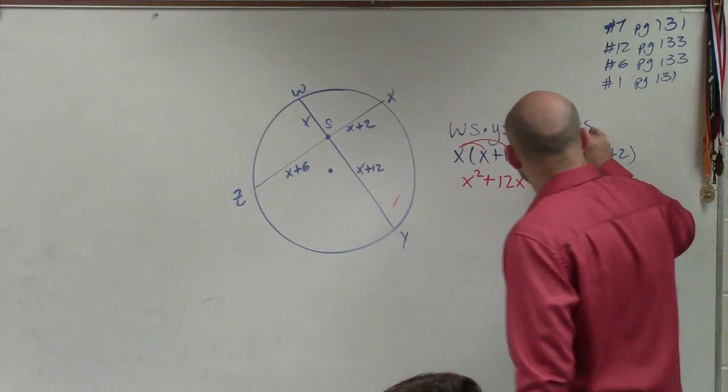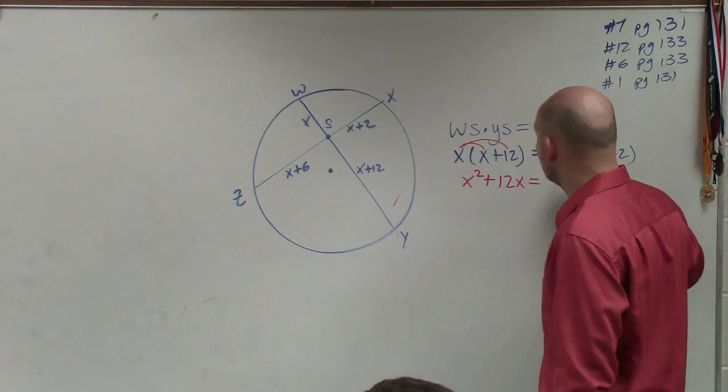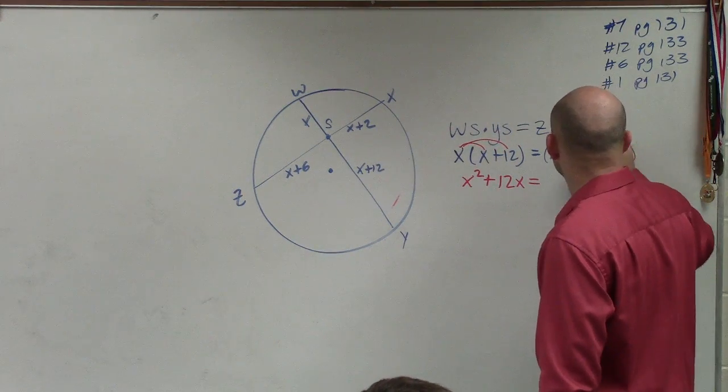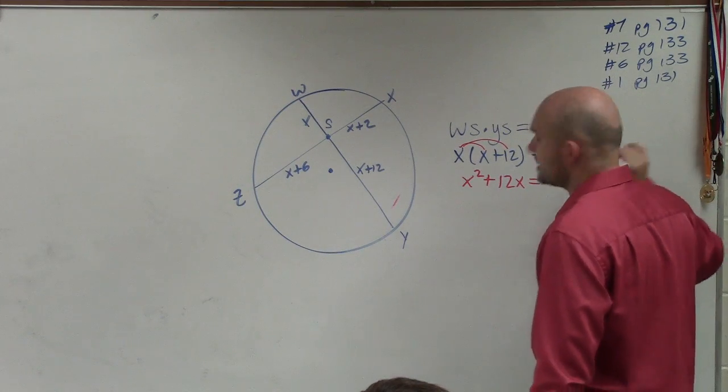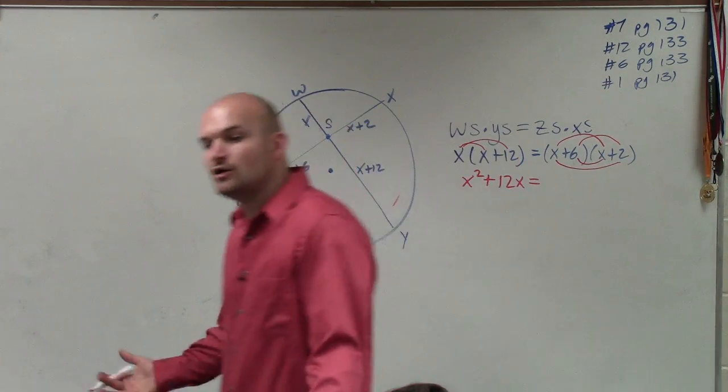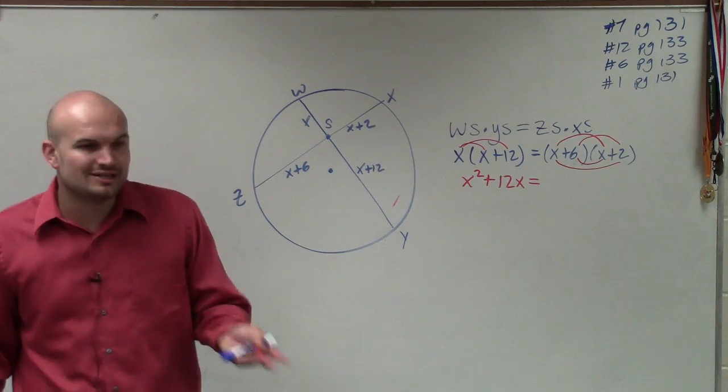And one of those ways that we practice in Algebra 1 was by using FOIL, where you multiply the first terms, the outer, the inner, and then the last.